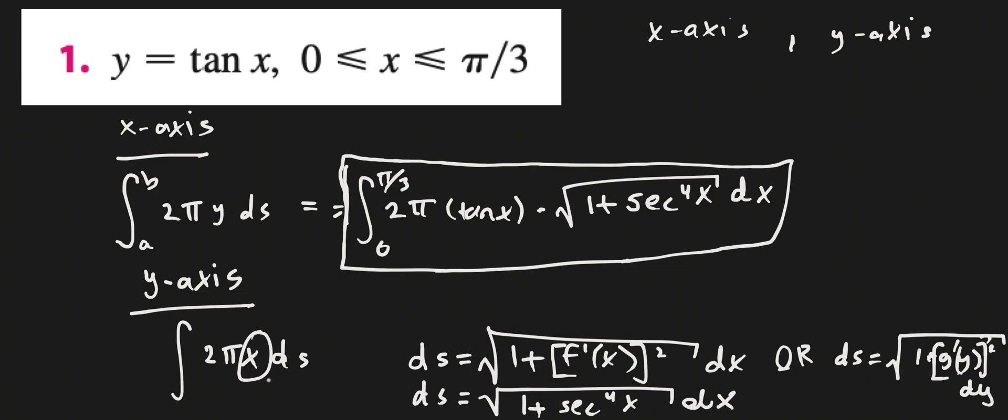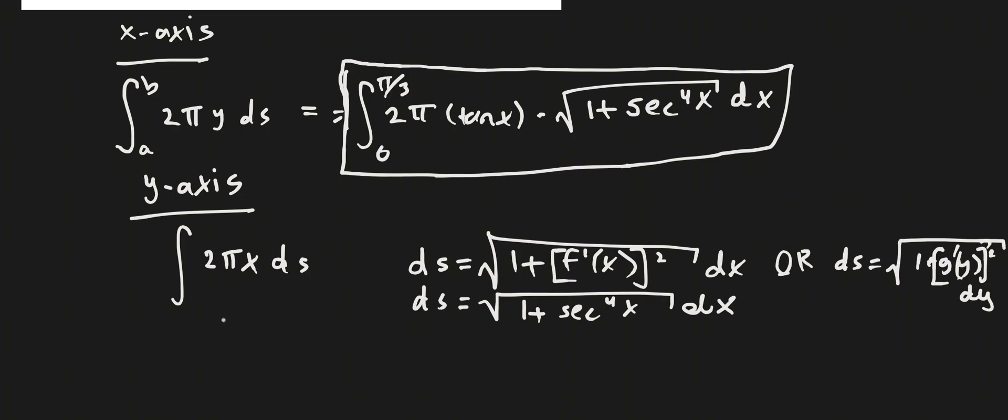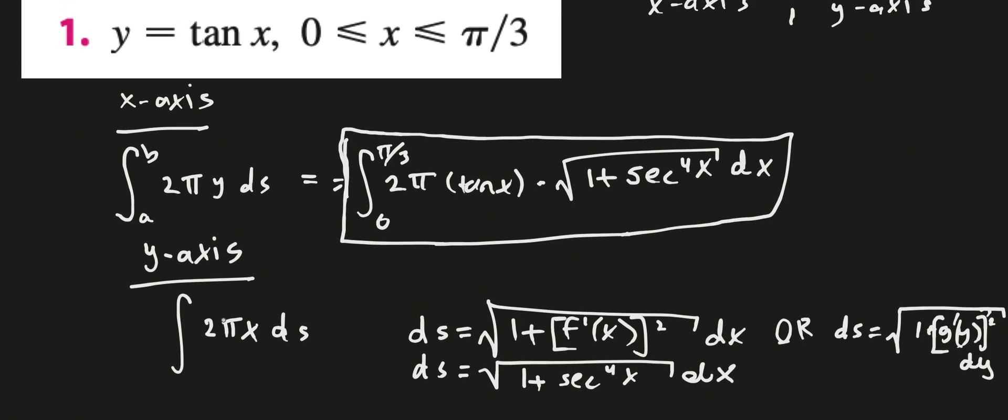But here we have x instead of y. So what do we do there? Well, if we want to express this in terms of just x, we could just leave it like this. Because if we were to rewrite this, right? x is equal to inverse tangent of y, something like this. Then if we were to replace this x with inverse tangent of y, we wouldn't be in the x world anymore. So this is the best x for us to be in.